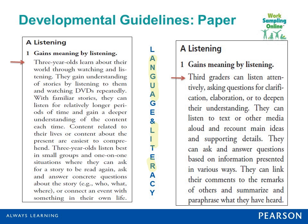The developmental guidelines describe what we would expect a child of a certain age or grade to be able to do with respect to a specific skill or behavior. For example, if you were looking at language and focusing on listening — a functional component of listening — maybe the skill is whether children in your room are gaining meaning by listening. For a three-year-old, what would you expect developmentally?